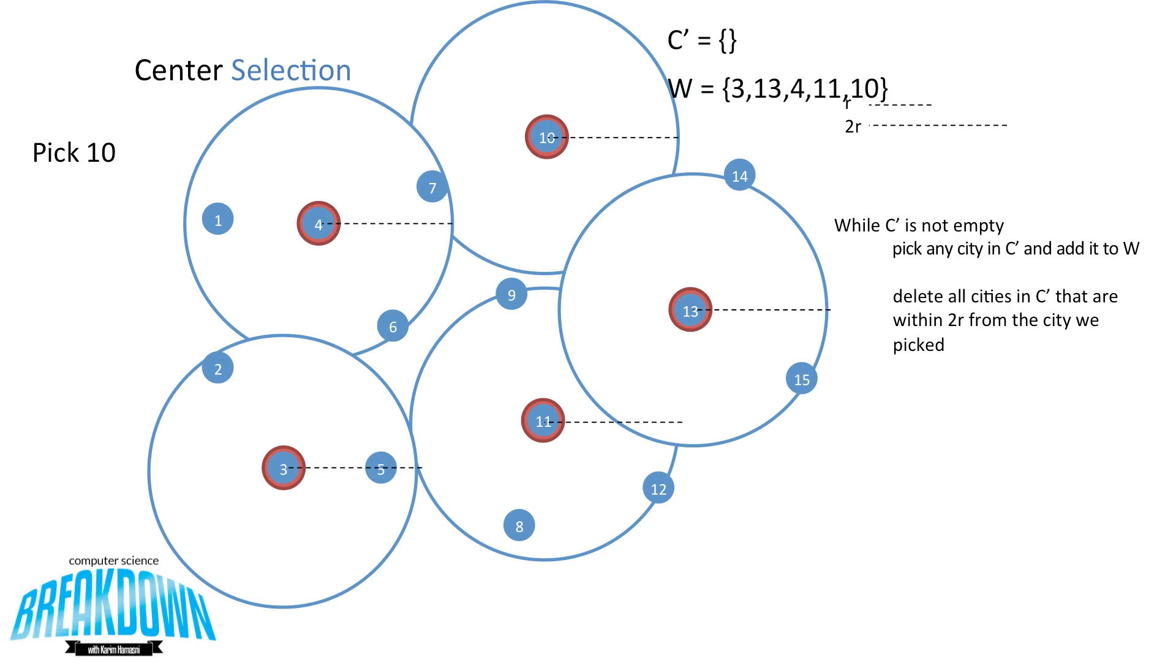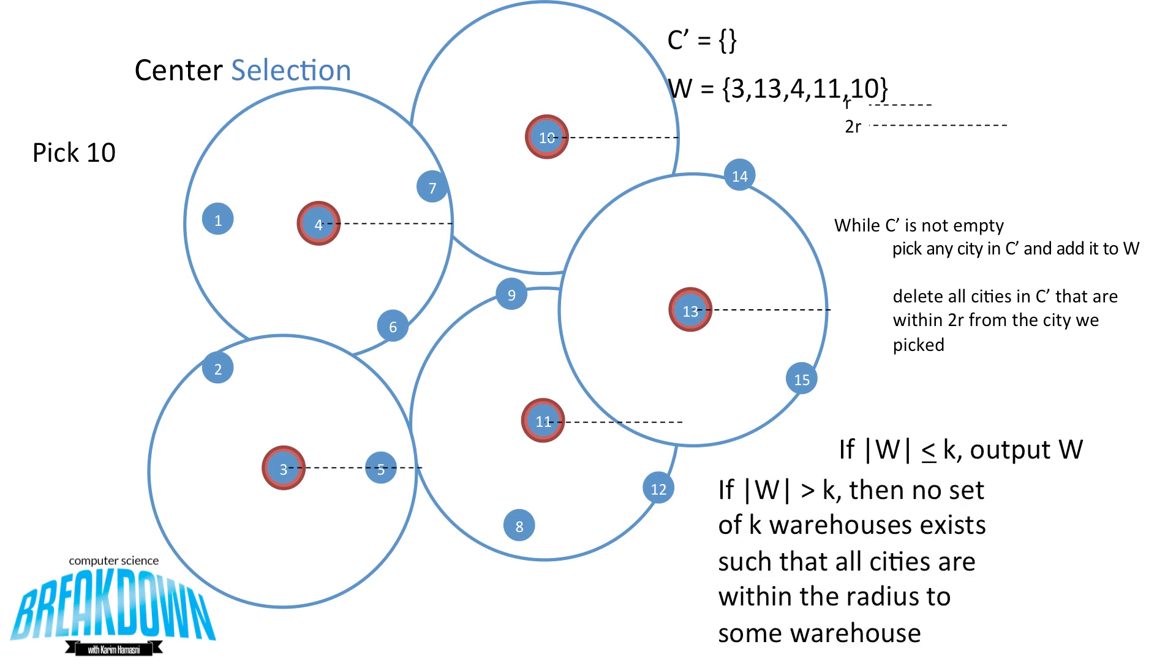The next part of the algorithm is: if the number of warehouses in w is less than or equal to k, then we can output w as a valid solution. So because our k is equal to 5 and we have 5 items in w, this would be a good enough warehouse placement to output as a possible solution. But if the number of w that we've placed in our algorithm is greater than k, then no set of k warehouses exist such that all cities are within the radius to some warehouse. So we would need to increase our assumed radius size and try again.